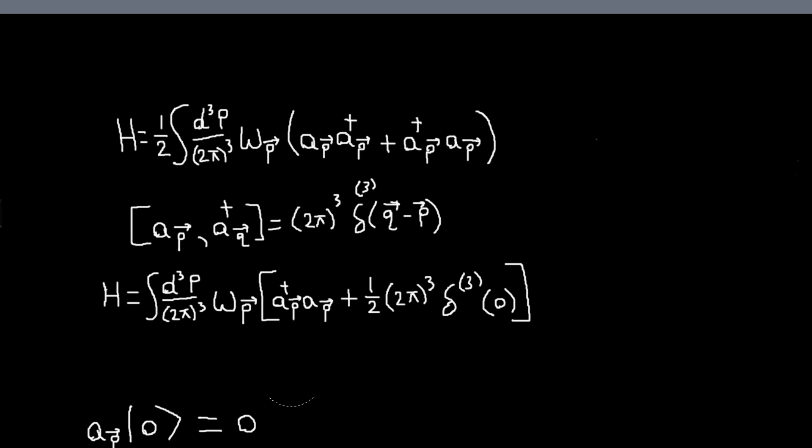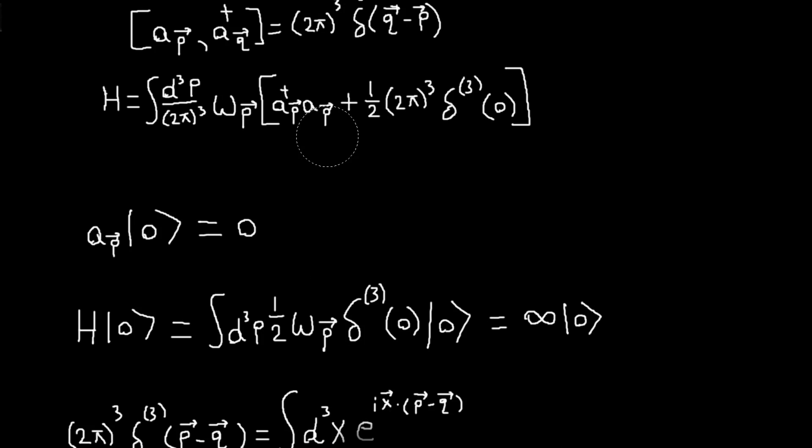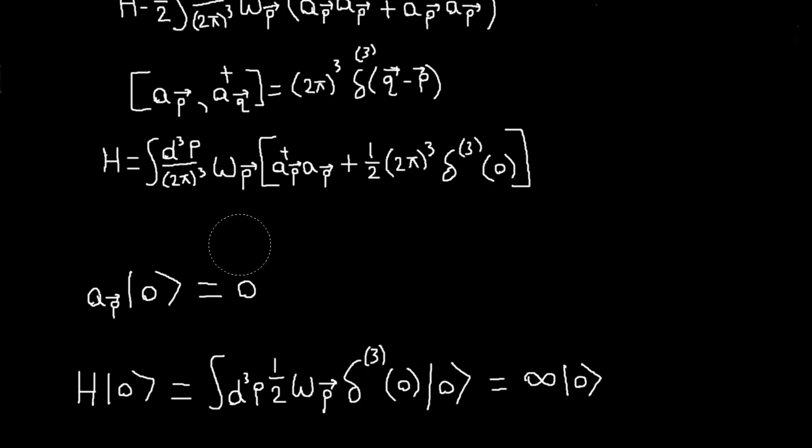First, let's define a vacuum state, a ground state. So we'll define that in the usual way, as a state where any of our annihilation operators acting on it will give zero. So if we want to find the energy of our ground state or vacuum state, then we will act our Hamiltonian on it. And if we do that, this term leads with an annihilation operator, so it will be zero, and we'll just be left with this term. And again, this delta function is infinite, so we get an infinite energy in our vacuum state.